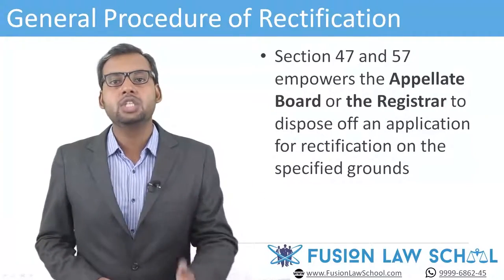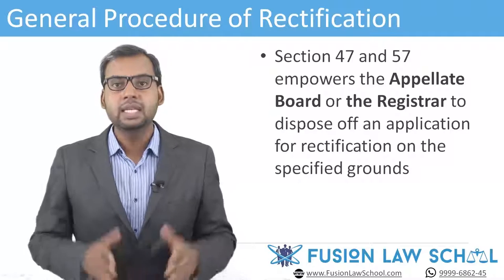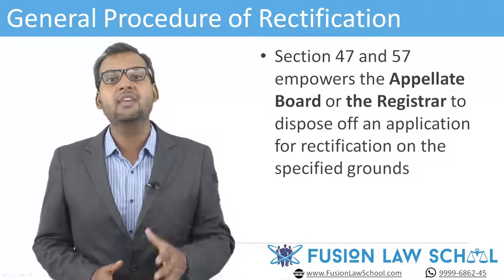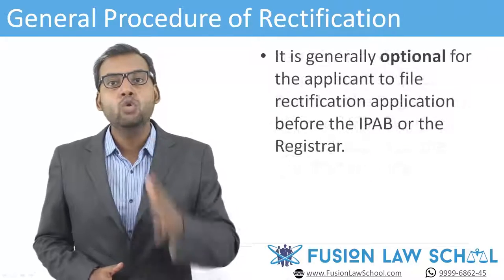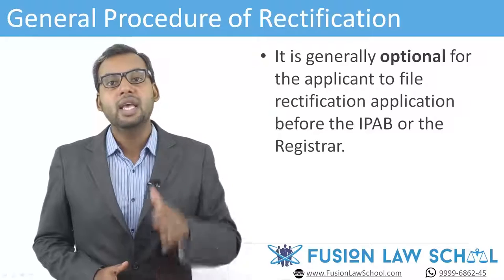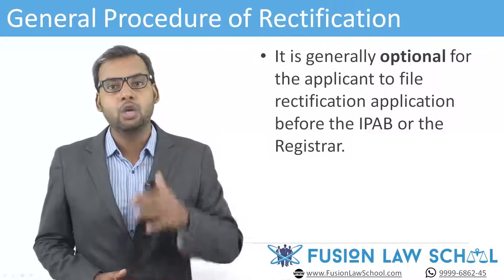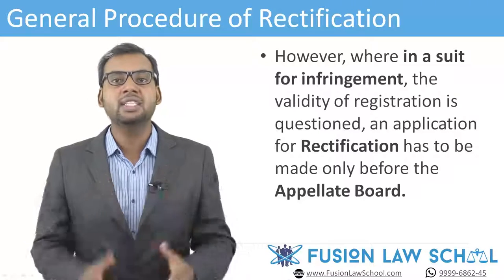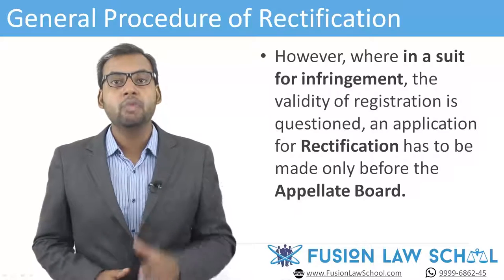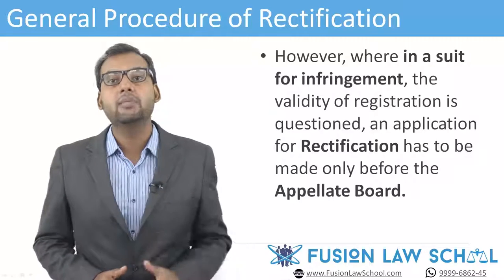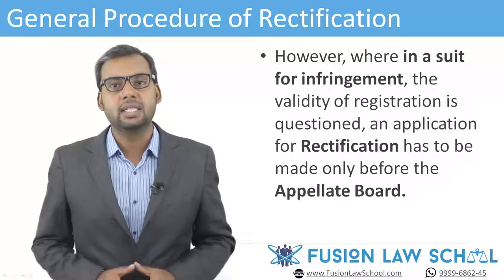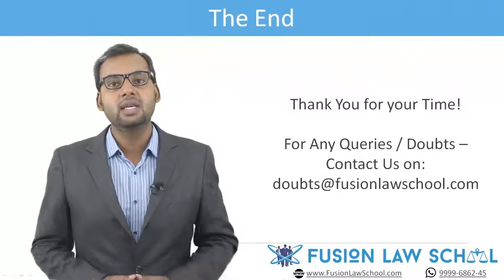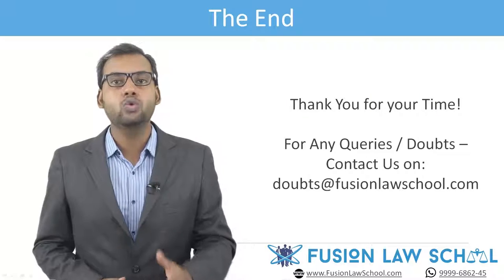The next topic is the general procedure of rectification of trademarks. Sections 47 and 57 empower the Appellate Board or the Registrar to dispose of an application for rectification on specified grounds. Generally, it is optional for the applicant to file a rectification application before the IPAB or the Registrar. However, where in a suit for infringement of a registered trademark the validity of registration is questioned, the issue of validity can be determined by the Appellate Board, so in such circumstances an application for rectification must be made only before the Appellate Board.